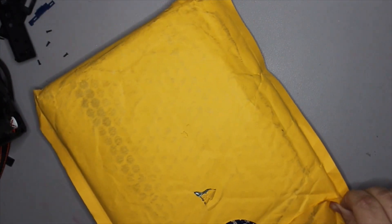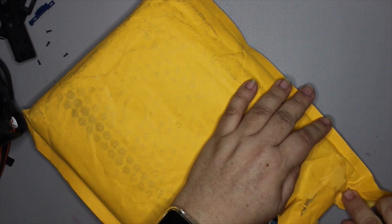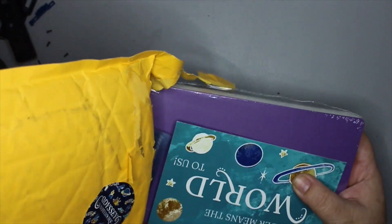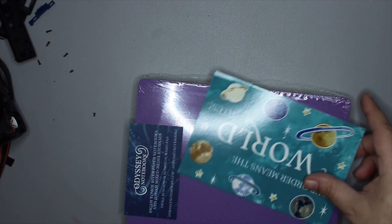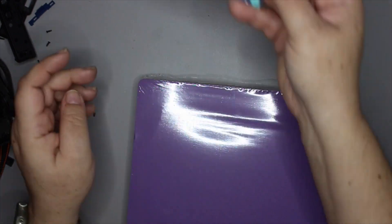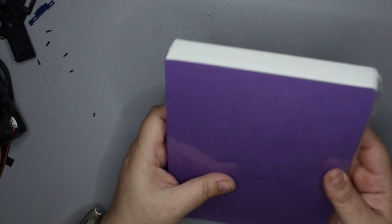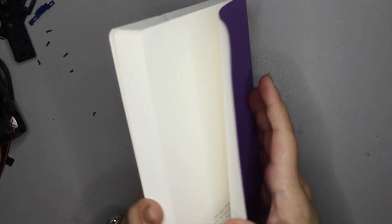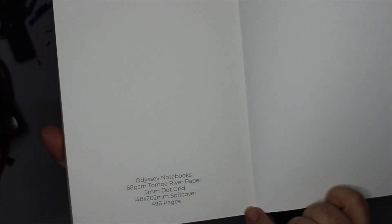Next. This is from Odyssey notebooks, because I really do like Odyssey notebooks. However, the ones that I want are completely out of stock, pretty much everywhere, so I went with this instead. That's cute. And that's cute. Look at this. Wow. I like this. This reminds me of the Nanami ones too, like the cover. So this is supposed to be 68 GSM, yeah, 68 GSM Tomoe River paper, five millimeter dot grid. Oh, it's nice.